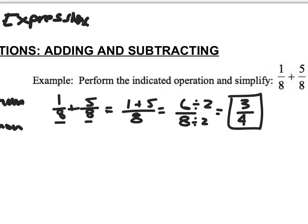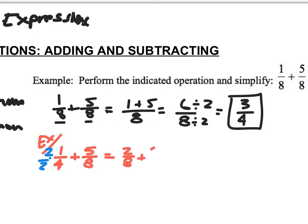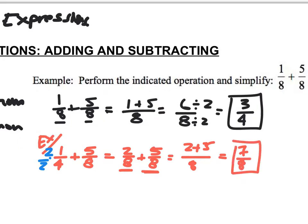Now let's look at an example where we don't have common denominators. Let's say we have one fourth plus five eighths. I want to get a common denominator of eight, so I multiply the one fourth by two over two. That gives me two eighths plus five eighths. Because I have a common denominator, I add my numerators: two plus five over eight, which gives me seven eighths. Seven and eight share no common factors, so that's the final answer.